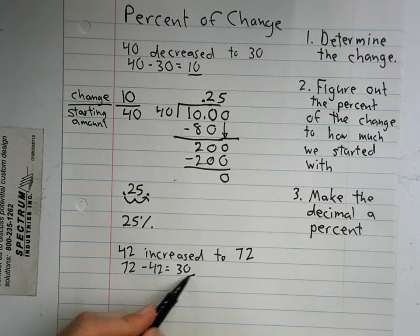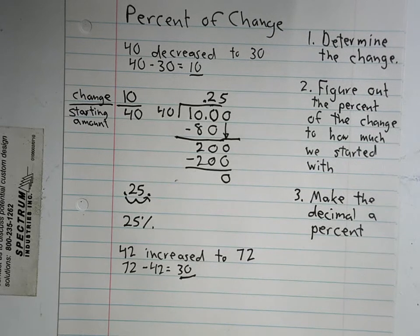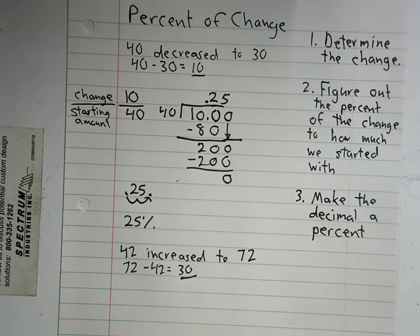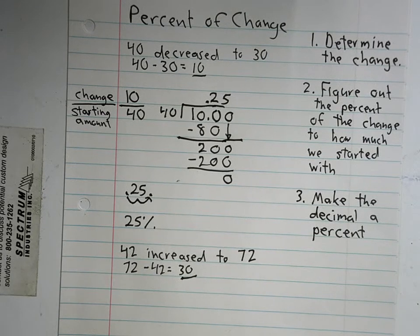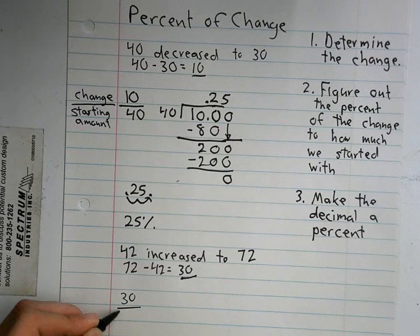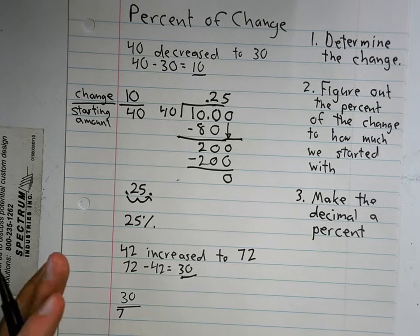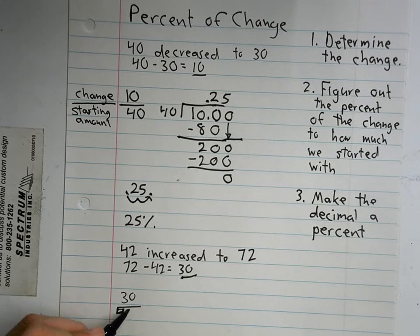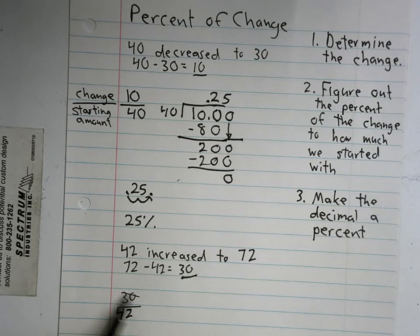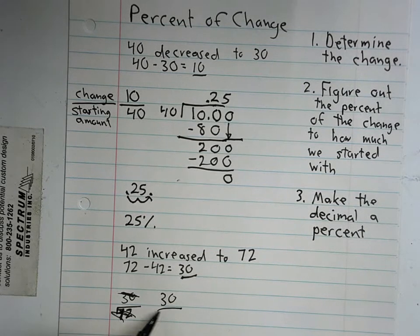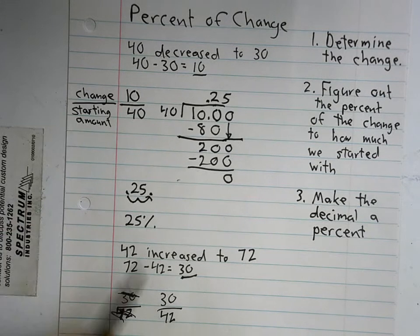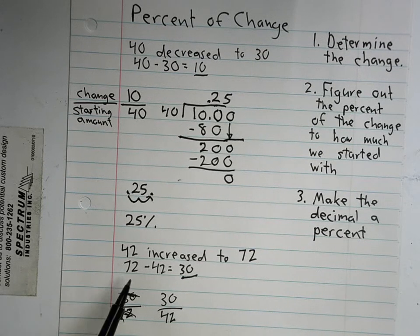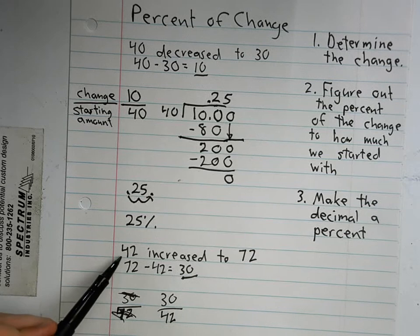Then we have to set up our fraction, our ratio basically, to figure out the change and how much we start with to figure out our percent. What's my ratio? McKenna, 30 over 72. Sorry, not 72. 30 over 42. Because it's the change, which is 30, over the starting amount. We started with 42. It's not just what's the first number of the subtraction sentence. It's what amount we started with.